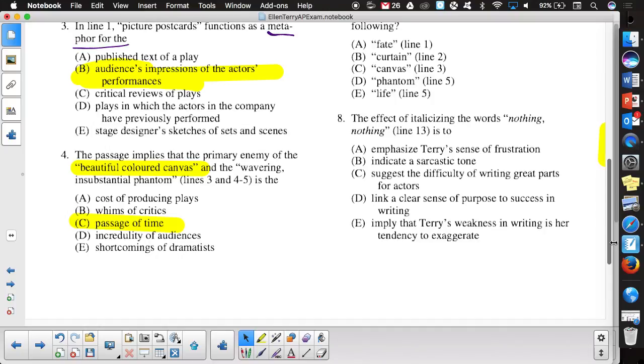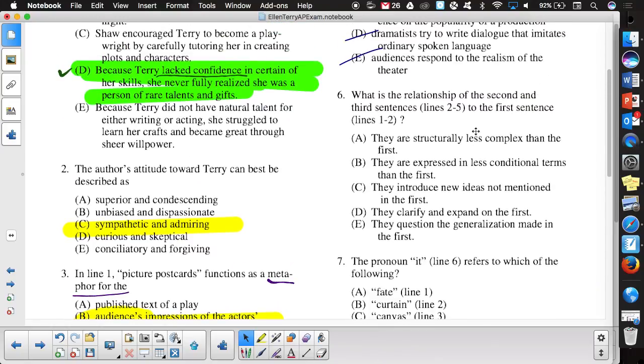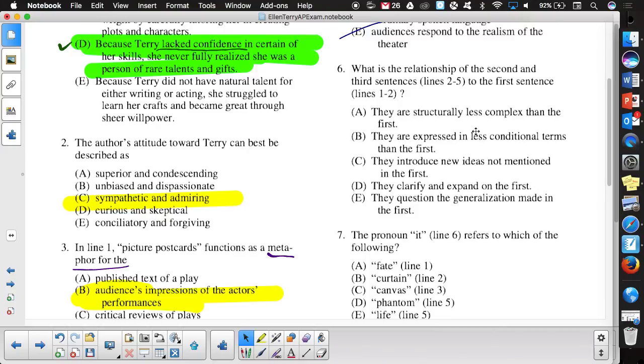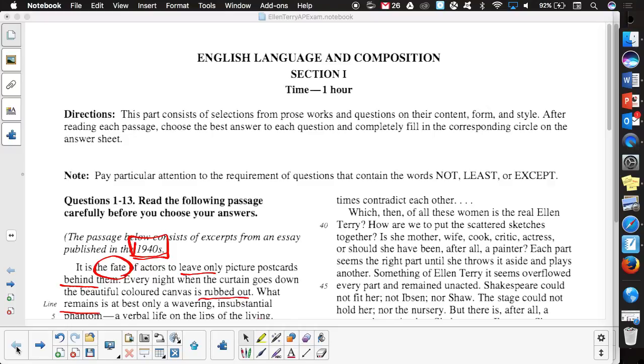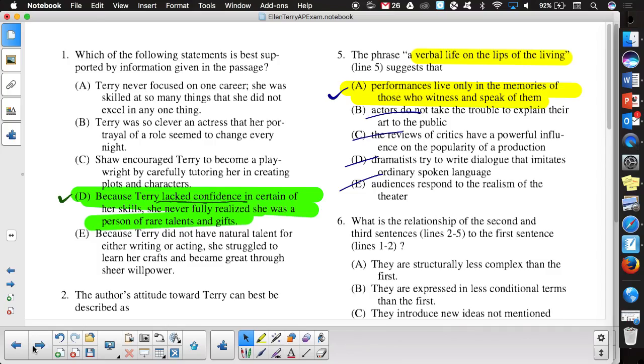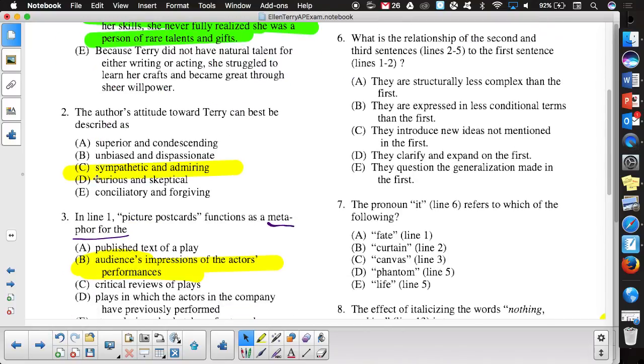Number six, you're still dealing with that same area, but now it's a different type of question, more of how do these sentences function with one another? What is the effect? So the first statement, first sentence line one to two, it's the picture postcards, and then number two, lines two to five, talking about that canvas being rubbed out. The only thing that's left is the wavering, insubstantial phantom, verbal life on the lips of the living. What do those second two sentences, sentences number two and three, do to the first? So far, it's like a structural type thing. Ellie? You're going clarify and expand. The answer's going to be clarify and expand.